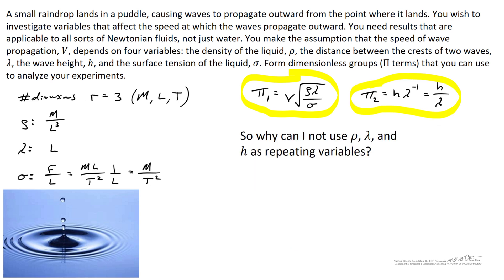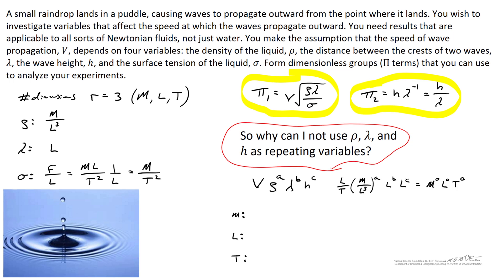So remember earlier on when I said you can't use density, lambda, and h as repeating variables? Well, let's try it. Let's start by writing the velocity, the density to the a power, lambda to the b power, and h to the c power. We'll do it like we usually do, and we'll come up with a system of three equations and three unknowns.